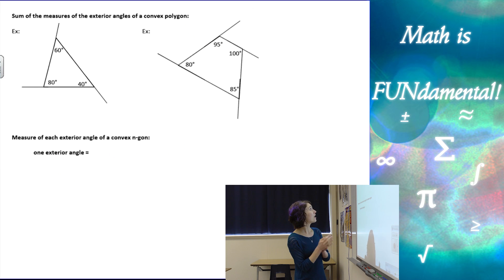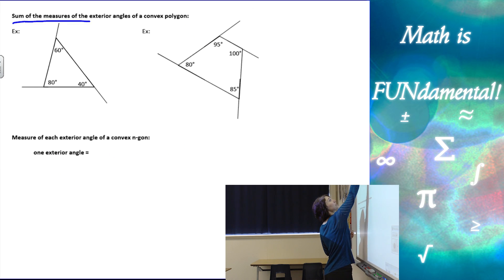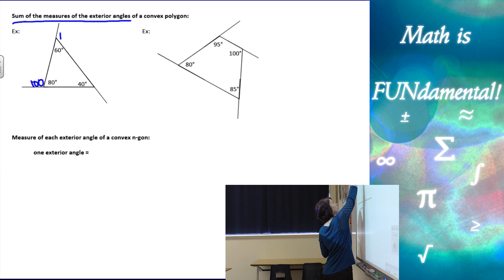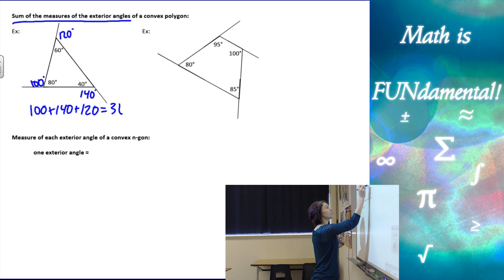Next we're going to look at the sum of the measures of the exterior angles of a convex polygon. This doesn't have to be a regular polygon. It could be any polygon. Let's look at an example. If this is 80, and we want all the exterior angles, we're going to use that linear pair, the supplementary angles, and find those outside angles. Next to 80 would be 100. Next to 60 would be 120 degrees. Next to 40 would be 140 degrees. If I add them up, I'm going to get 360 degrees.